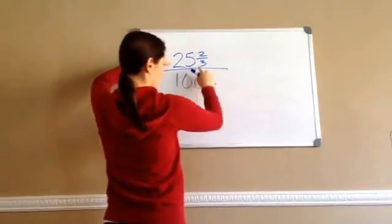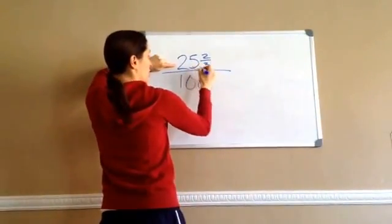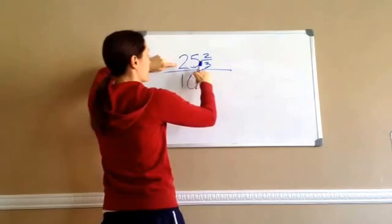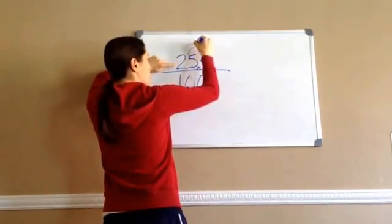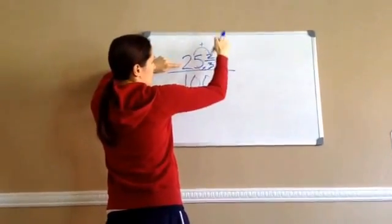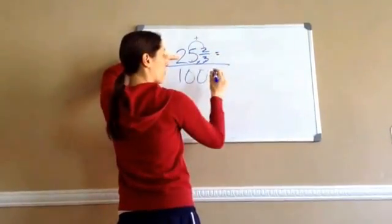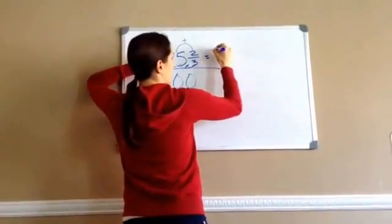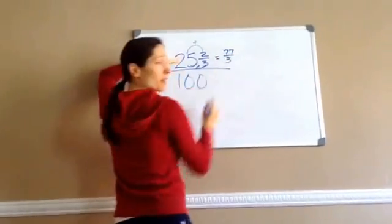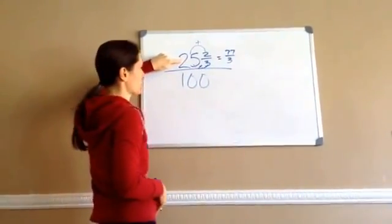of this one right here. So remember that rule where you go 25 times 3, which is 75, plus 2, 76, 77. So 25 and 2 thirds written as an improper fraction is really 77 over 3. Remember how to do that in the improper fractions?